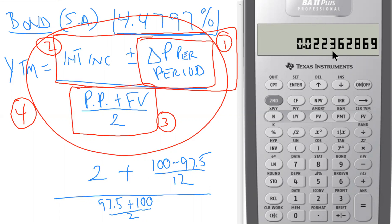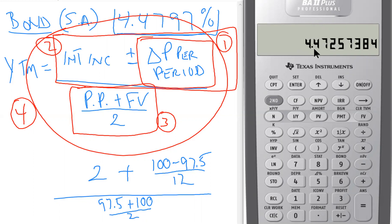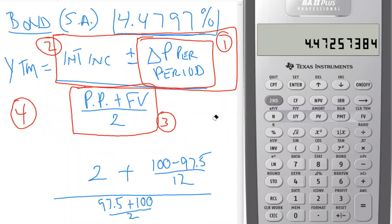Multiplying by 100 gives us the semi-annual yield, then multiplying by two gives us an annual approximate yield to maturity of 4.4725%. Comparing this to our previous calculator answer of 4.4797%, they are very close — matching to two decimal places — but they differ at the third and fourth decimal places.